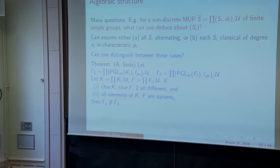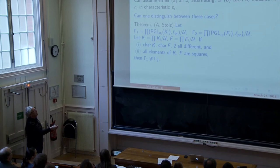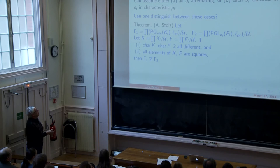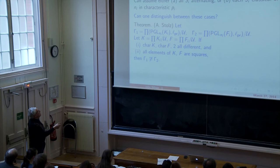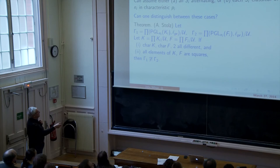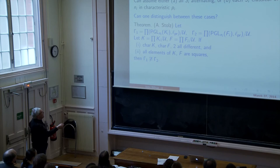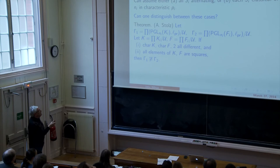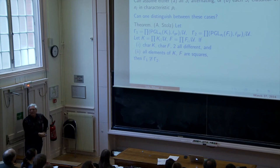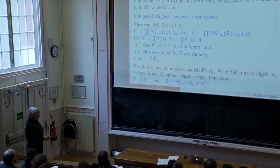As I said before, you can assume, if you like, that all Si's are alternating or each Si is a classical group of degree Ni and some characteristic Pi, which might actually be infinite. Because, no, actually it isn't infinite if we stick to finite groups. So, a first question one might ask: can you distinguish between the cases of alternating groups and classical groups? Or, can you, if you know that the groups are classical, can you do any more? Can you say anything about the characteristics? And the first interesting result was proved by Abel Stolz. He took two metric ultraproducts of projective general linear groups, Γ1 and Γ2, and looked at the fields that were involved here and took their ultraproducts. An ultraproduct of fields is a field. An abstract ultraproduct of fields is a field.